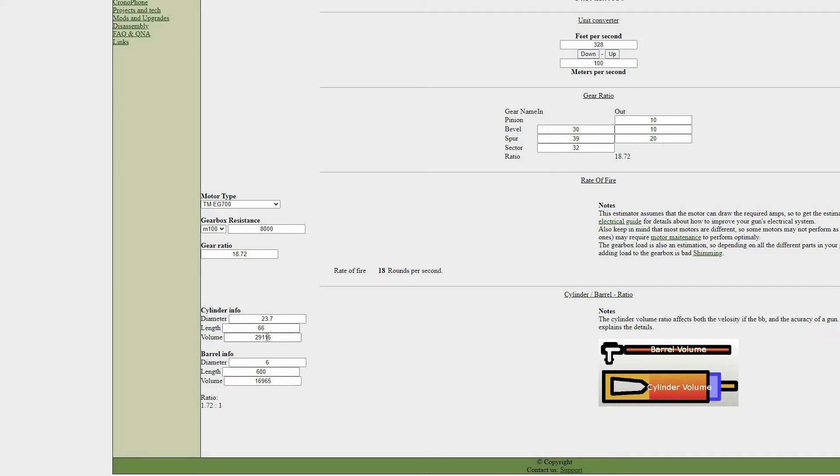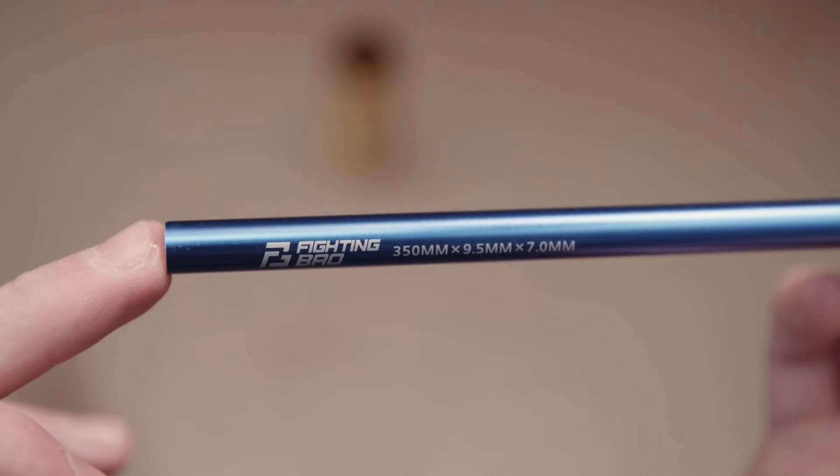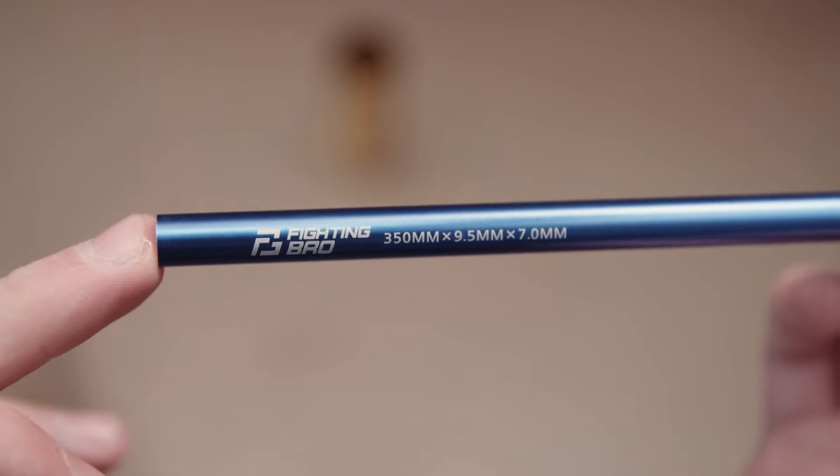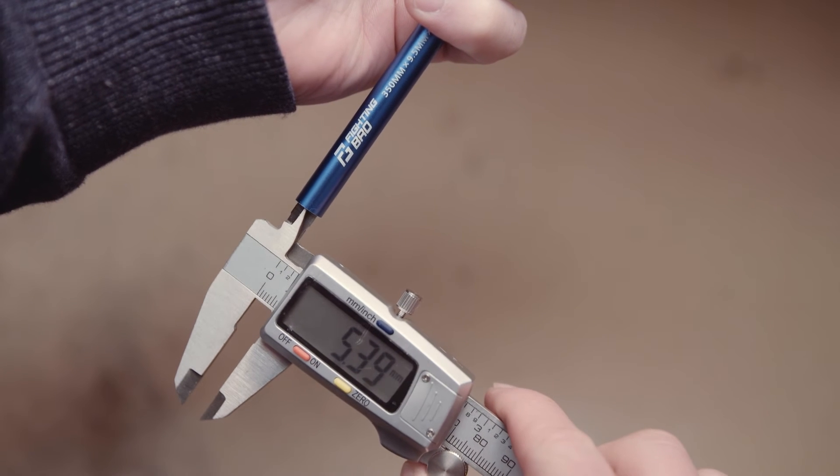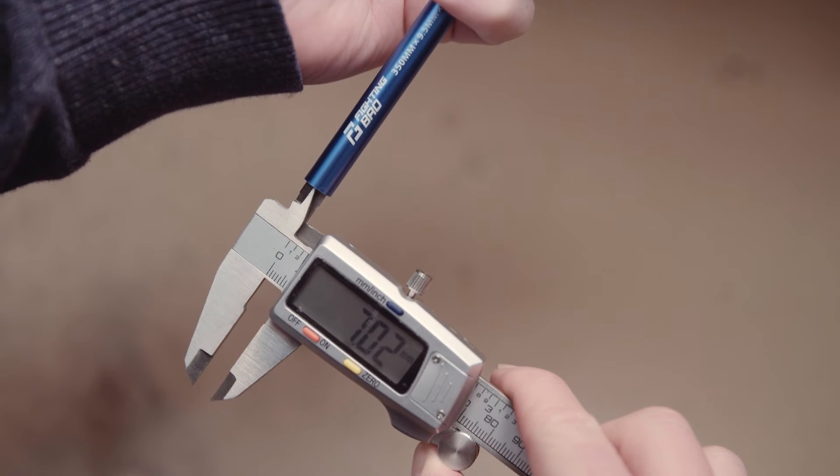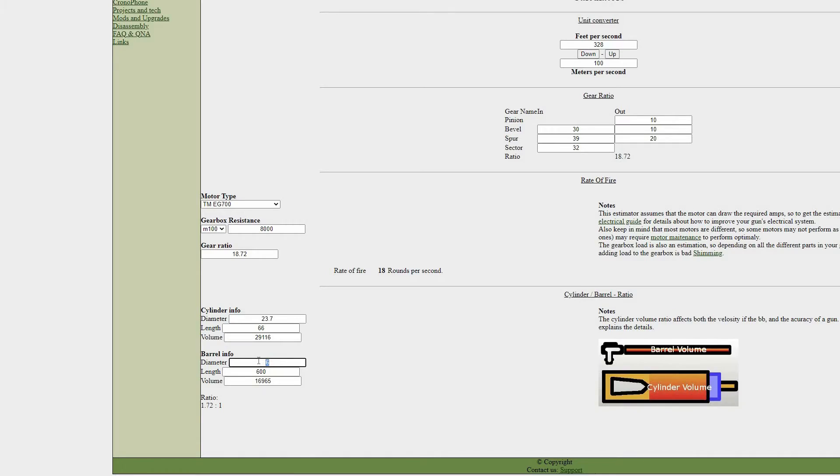So for my full cylinder, that's giving me a length of 66 mils. Now for my barrel, it actually has the values on the outside, but I'm going to measure it anyway to show you how you can do it. With my vernier, I measured the inside and it was 7 mils as it's a tighter barrel, while a standard barrel would be about 7.5. I know the length of this is 350 mil, so I'm going to put these into the calculator.